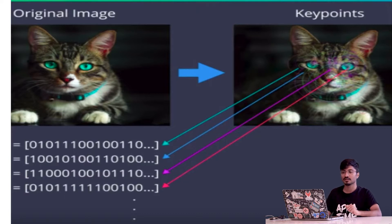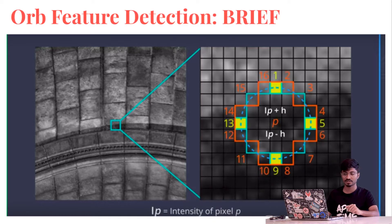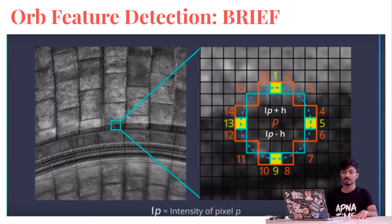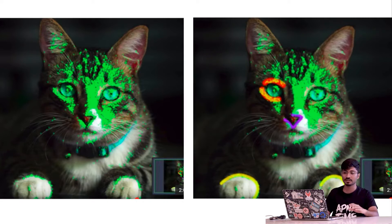What is the use of BRIEF? In normal facial recognition algorithms like SURF, we compare 16 pixels, as shown in orange. But in the BRIEF algorithm, we use an optimization technique and compare only four pixels, shown in yellow. This is the feature vector created by the SURF algorithm, and this is the feature vector created by the BRIEF algorithm. You can see the vector is more distinctive and the key points are more accurate.